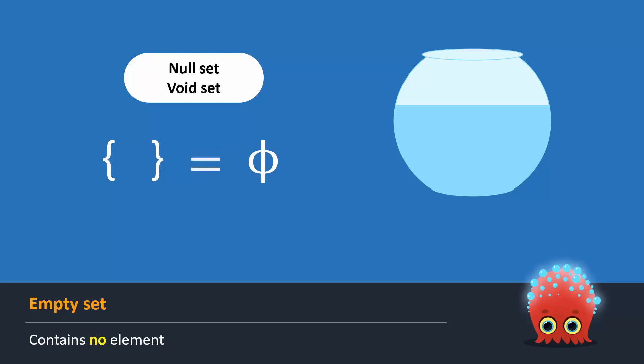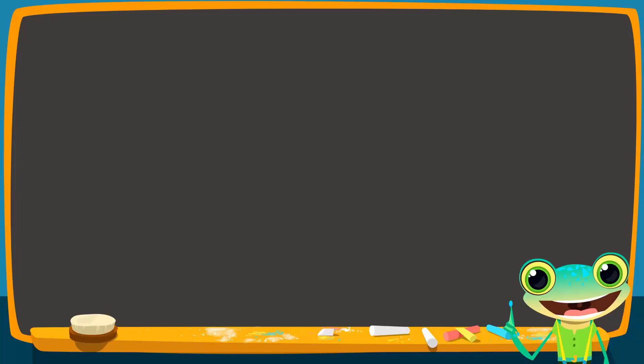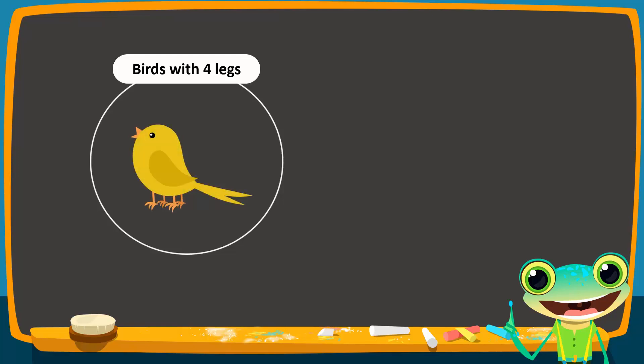Let's look at the empty set with another example. We are asked to represent a set of birds having four legs. We know that birds have two legs and it is impossible for a bird to have four legs. So, the resultant set will be empty. It is written as empty braces or phi. Both representations are correct.